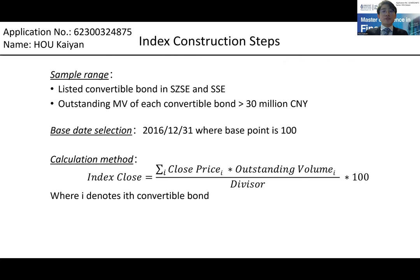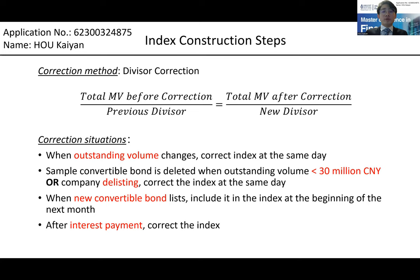Third, construction steps. The sample range is all Kanbans listed in SZSE and SSE. The outstanding market value of each Kanban should be larger than 13 million Chinese yuan. The index's base date is the last trading date in 2016, because the Kanban scale of the whole market significantly enlarged in 2017. The calculation formula is shown here. However, the divisor needs to be corrected, which is called divisor correction. The situations for correction are listed, including change in outstanding volume or market value, listing status, and interest payment.